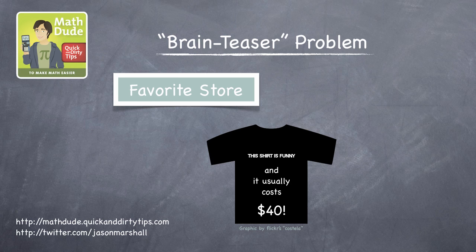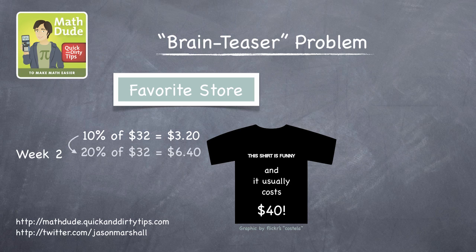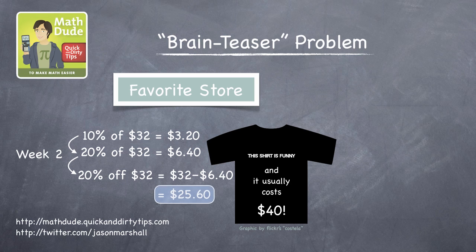The next week, they start offering an additional 20% discount off this new price. So 10% of $32 is $3.20. 20% of $32 is therefore twice this, or $6.40. And the new sale price is therefore $32 minus $6.40, which is $25.60.